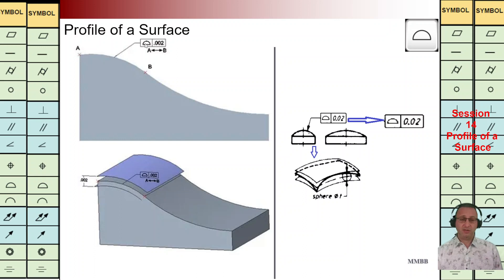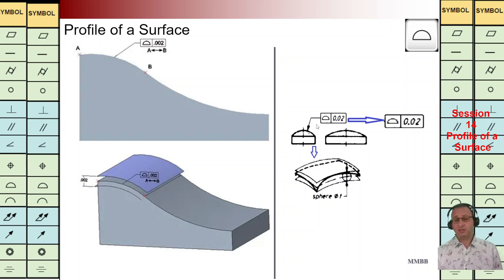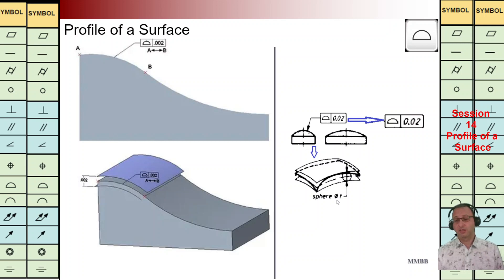Let's see this example. We have the surface profile symbol here, TZ is 0.002 from A to B. It means we are going to have two parallel surfaces with this distance and this surface should be in that interval. On the right-hand side, we can see we have a sphere and this symbol is referred to that. With this TZ, we are going to have two spheres with this distance — 0.02 — and this sphere should be in that interval. We are going to check just the shape, the form of that surface.